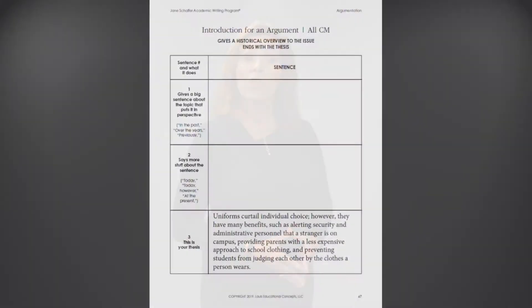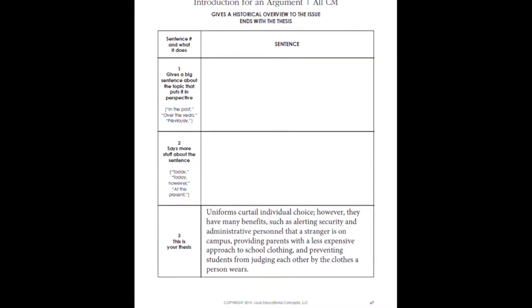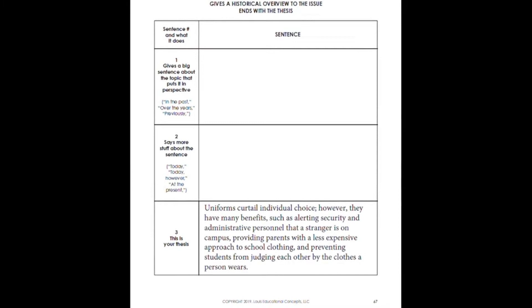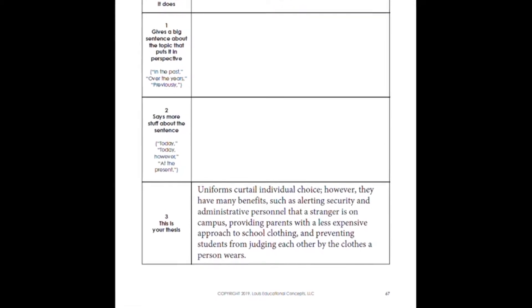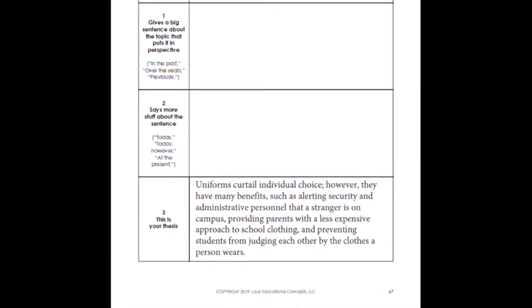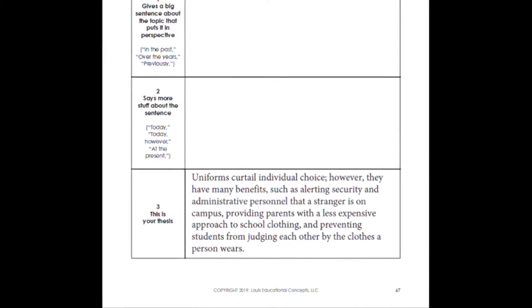The first step in a conclusion is to restate your thesis. Now don't just repeat it — that would be boring. Let's look at our sample thesis about school uniforms: uniforms curtail individual choice; however, they have many benefits, such as alerting security and administrative personnel that a stranger is on campus, providing parents with a less expensive approach to school clothing, and preventing students from judging each other by the clothes a person wears.